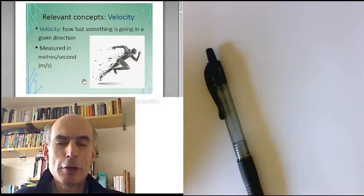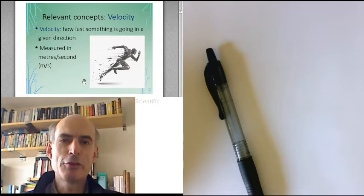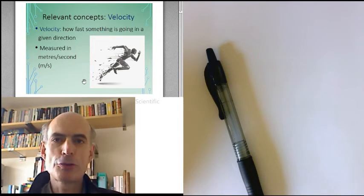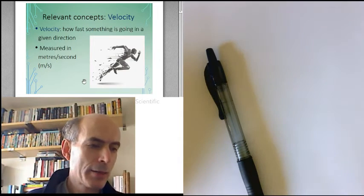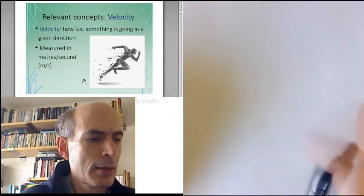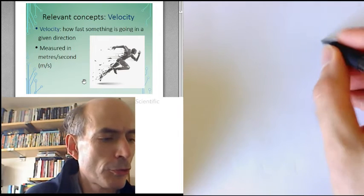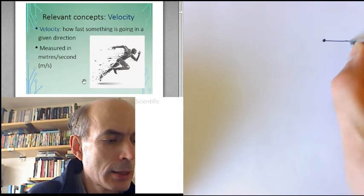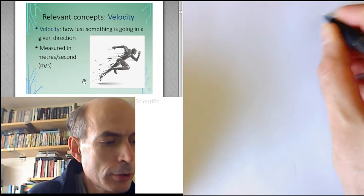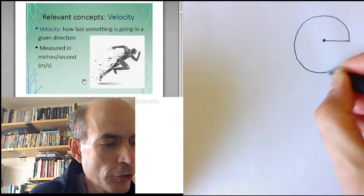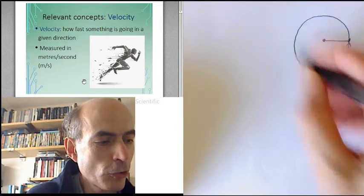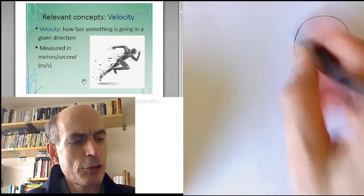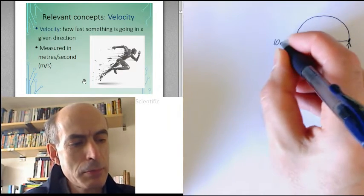Velocity. How fast something is going in a given direction. As opposed to speed, which is just how fast something is going. The difference can maybe be best explained in terms of an object flying round in a circle like this. It goes round the circle once.